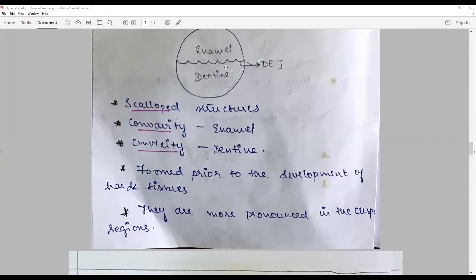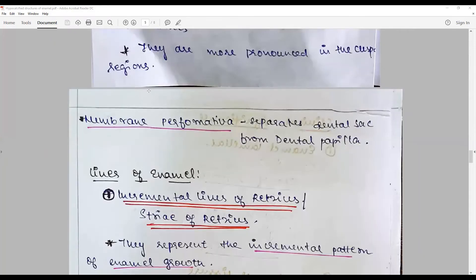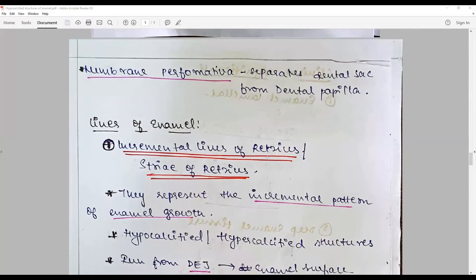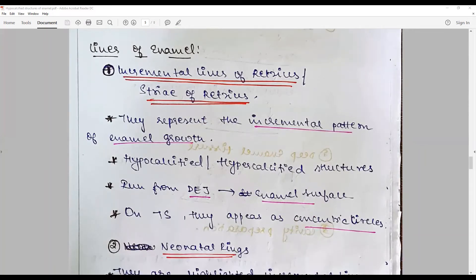The lines of enamel you see are Lines of Retzius, which represent the incremental rhythmic pattern of enamel growth or deposition. Because of the difference in the amount of calcium that is available, these could be hypocalcified or hypercalcified structures. They run from the DEJ and proceed towards the enamel surface.